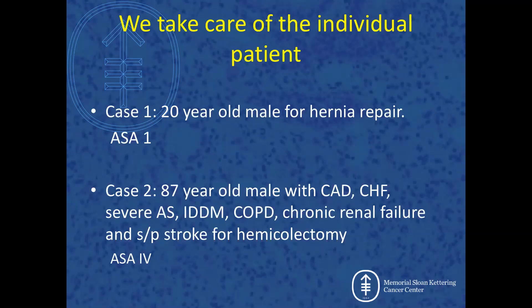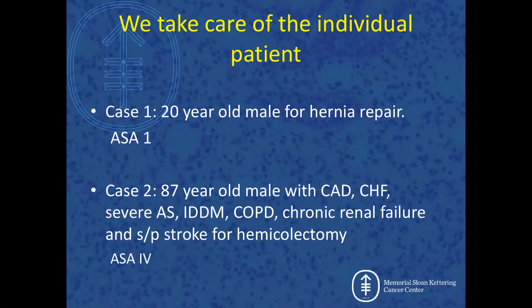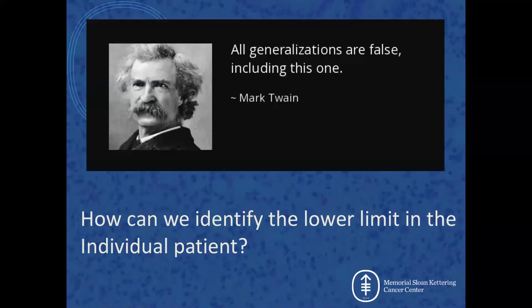One day you're taking care of a 20-year-old, otherwise completely healthy male patient for a hernia repair — classified as an ASA-1. The next day you take care of an 87-year-old male with a whole slew of comorbidities, classified as an ASA-4. Your concern about hypotension will be very different in these two scenarios. As Mark Twain said, all generalizations are false, including this one. So the question becomes: how can we get away from population health and start identifying the lower limit of blood pressure for the individual patient we are taking care of right now?